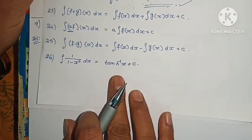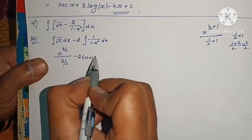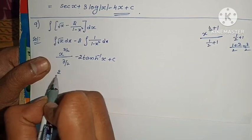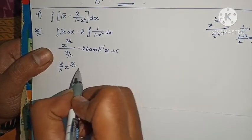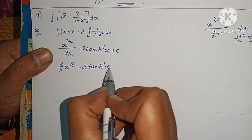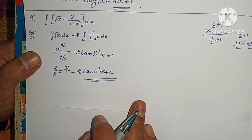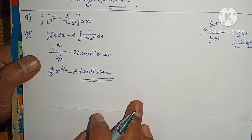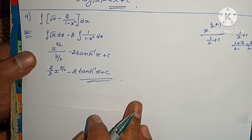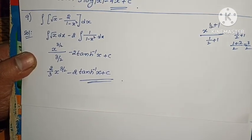Tanh inverse x plus c. The answer is 2 by 3 into x power 3 by 2 minus 2 into tanh inverse x plus c. Problem complete. In the next video we will discuss more. If you have any doubts, write in the comment box. If you like this video, like, share, and subscribe. Thank you.